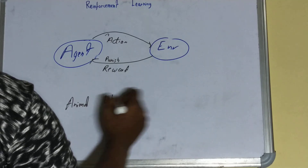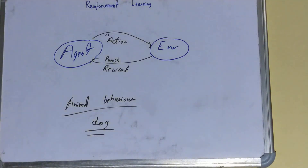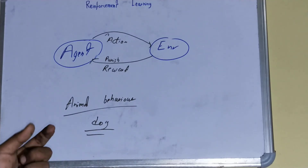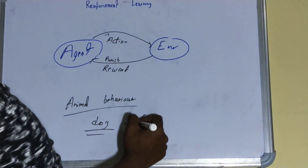We can take any animal example — let's take the example of a dog. If you want to teach a particular action to a dog, or you want to make a dog perform a particular action, then you have to set a reward for it. For example, you want a dog to bring the ball which you have thrown in a garden. What you need to do is throw that particular ball, and in the initial days you will take that dog, let him pick that ball, and once the dog picks that ball you give him some reward in the form of food.